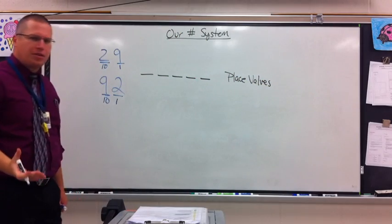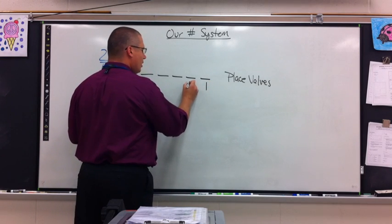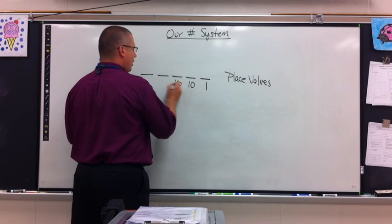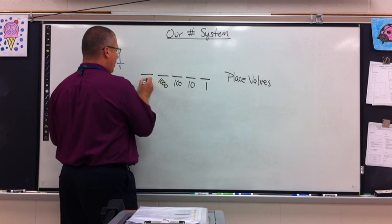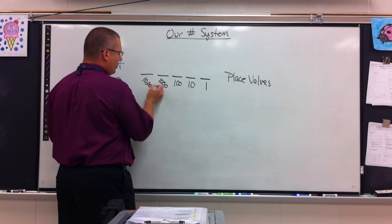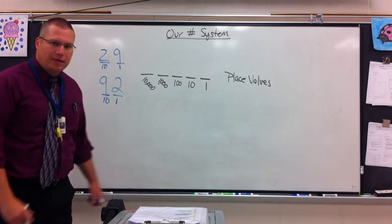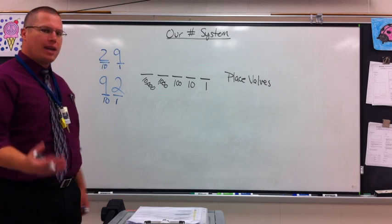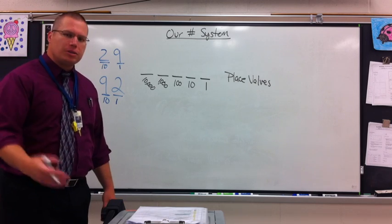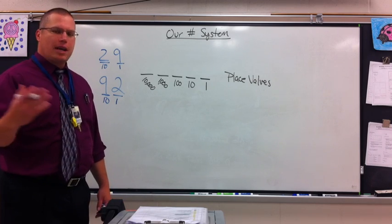First of all, you have to understand there are place values. There is the ones, the tens, the hundreds, the thousands, the ten thousands. And then I would say, what's the next one after ten thousands? You would say hundred thousands. After hundred thousands, millions. Ten millions, hundred millions, billions, etc., etc.